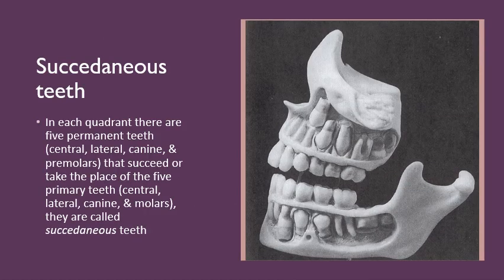In each quadrant there are five permanent teeth — the central incisor, the lateral, the canine, and the two premolars — and these succeed or take the place of the five primary teeth. So these are known as the succedaneous teeth: those permanent teeth that replace the primary or deciduous teeth.